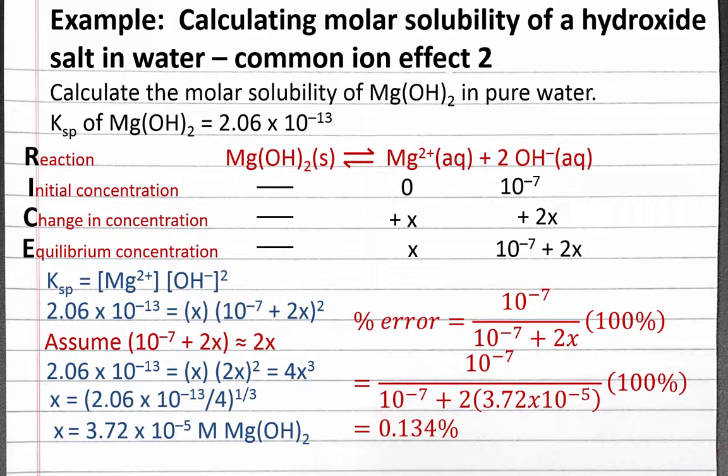This means our assumption was valid, so our molar solubility is 3.72 times 10 to the negative 5 moles of magnesium hydroxide per liter of solution.